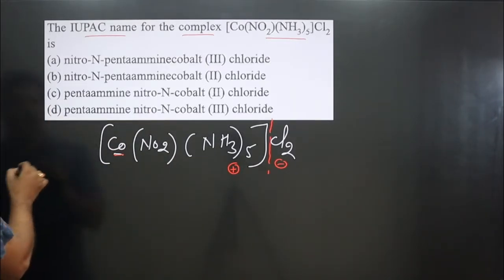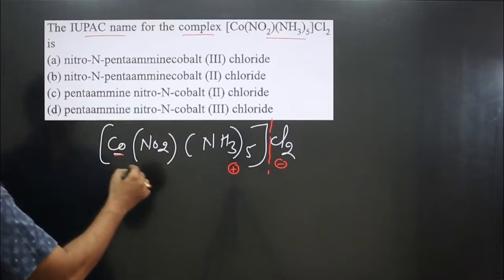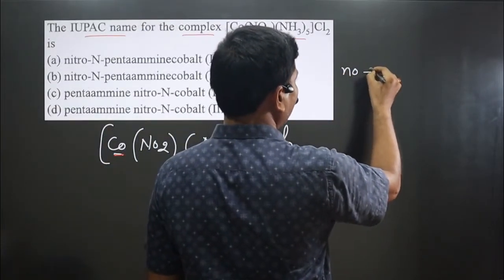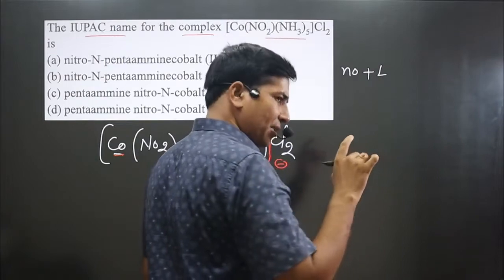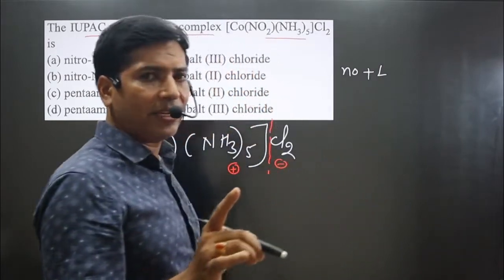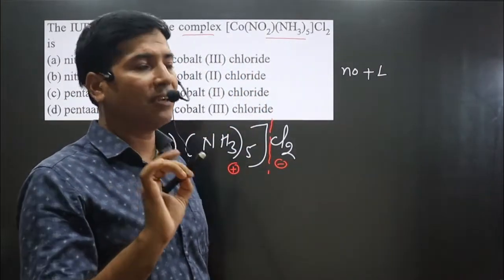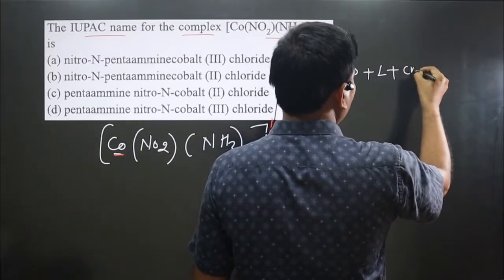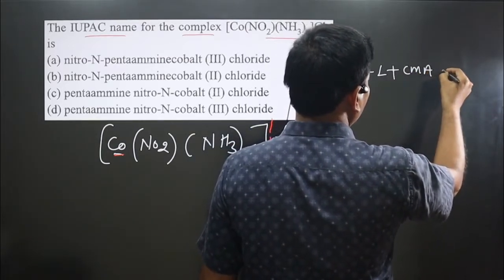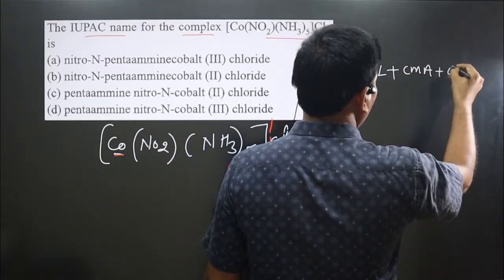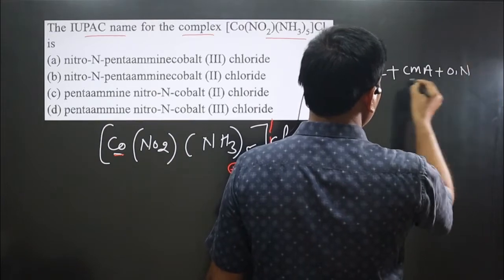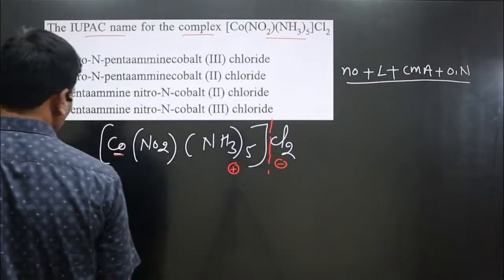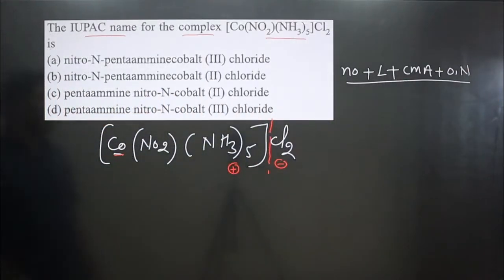To name the complex, follow this order: first mention the number of ligands, then the type of ligands. If different types of ligands are given, we follow alphabetical order. Then we write the central metal atom, followed by the oxidation number of the central metal atom written in Roman numerals.